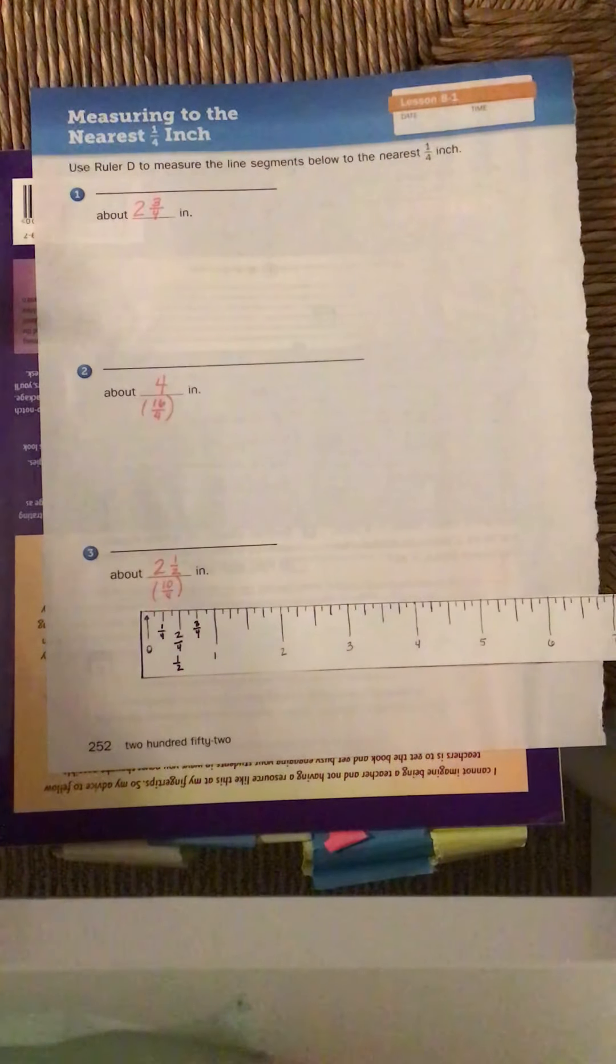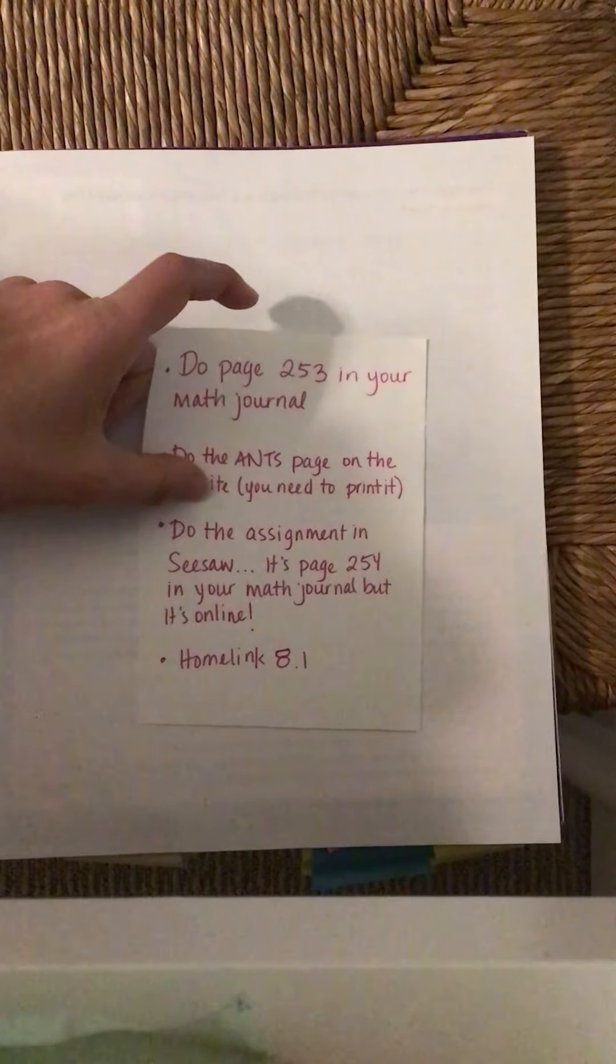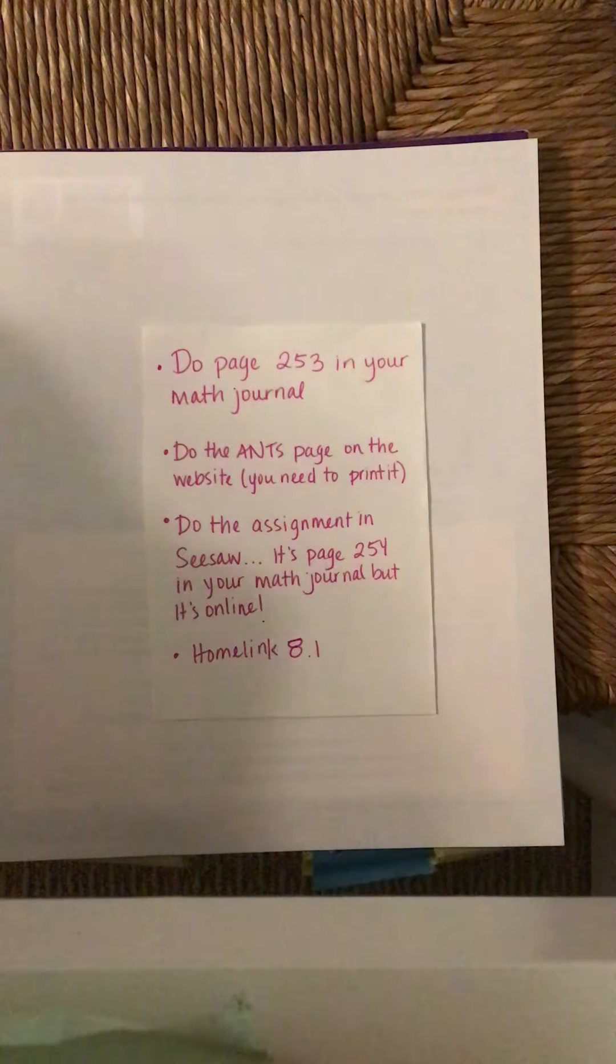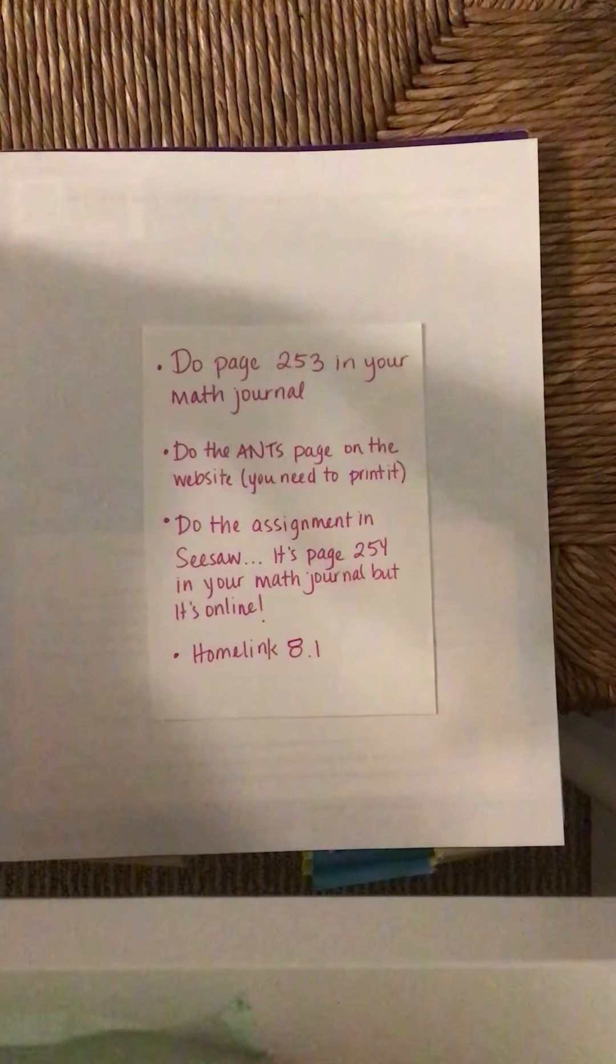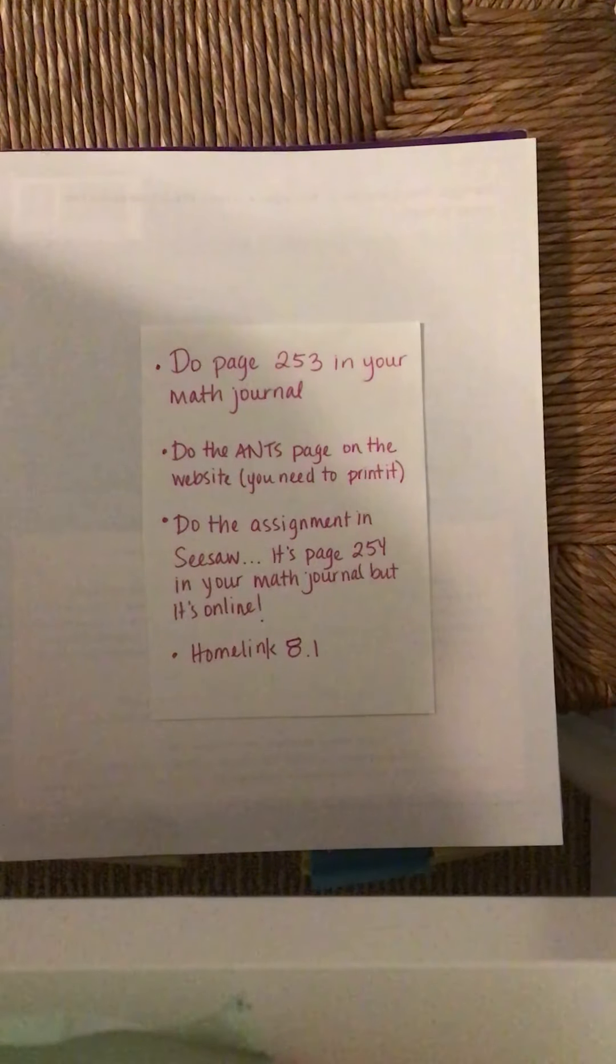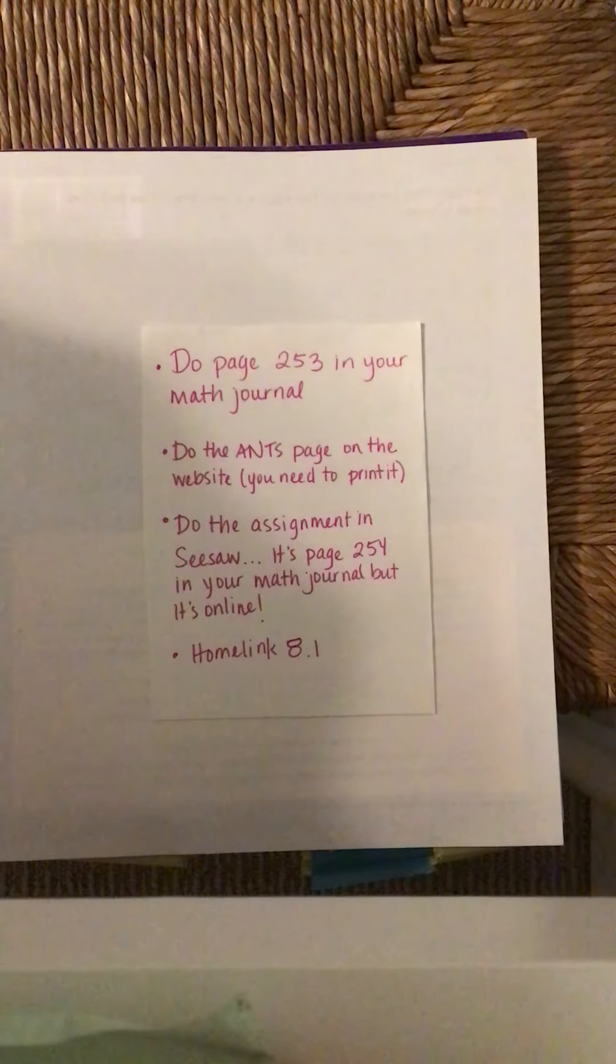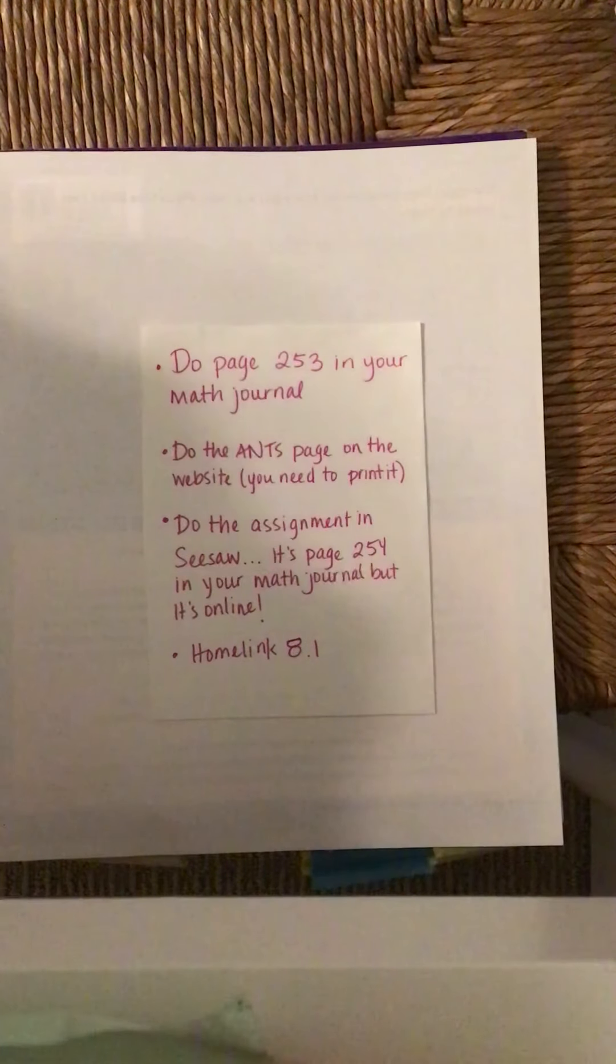Okay, here's what you guys are going to do today. Now that we have done page 252 together, here's your work list. It's going to be online, just like usual. But you're going to do the next page, page 253 in your math journal. It's a review of fractions. Then there's something to print out on the website. It's about two ants and their journey. You have to measure what their path was, who had the longer and shorter path. Then there is going to be an assignment on Seesaw, like we practiced yesterday. I have put your math box, page 254, on Seesaw. So you're not going to do your math box in your journal. You're going to do it on Seesaw and send it back to me. And then you're going to do Homelink 8.1. Good luck! See you tomorrow!